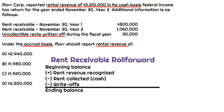On the screen is our roll forward for rent receivable. We always start with the beginning balance. Since the fiscal year ends November 30th, year two, the beginning balance would be the balance on November 30th, year one of $800,000. We would add rent revenue that's recognized under the accrual basis, and we don't know that — that's going to end up being our plug once we factor in all of the other information for this question.